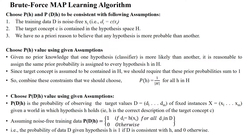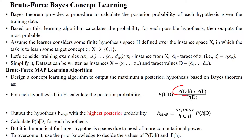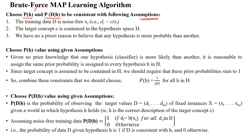In the brute force approach, there are three steps. We need to choose the prior probability P(H) and the likelihood P(D|H) consistent with the following assumptions. Here in this formula, we have P(D|H), P(H), and P(D). We have to choose values for P(H) and P(D|H) consistent with the following assumptions.